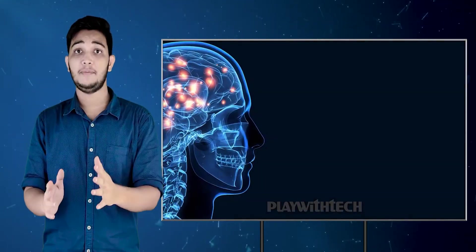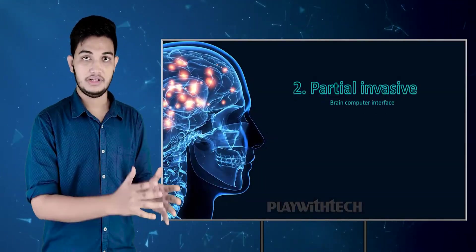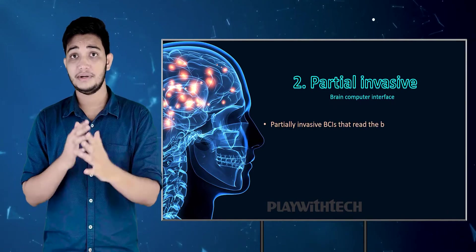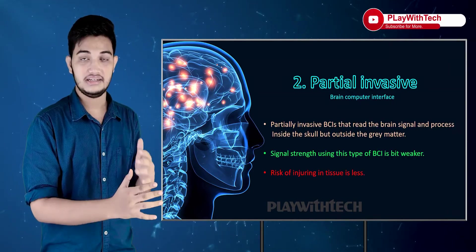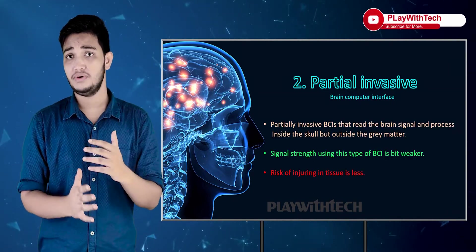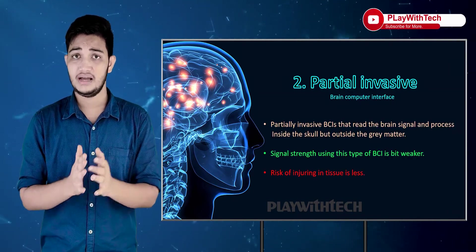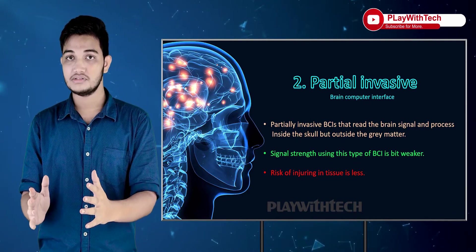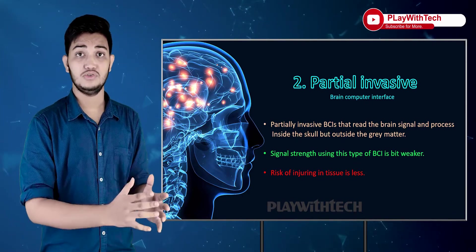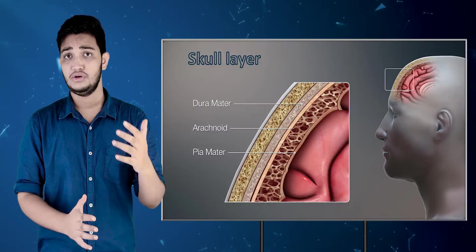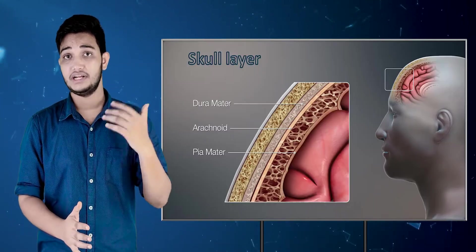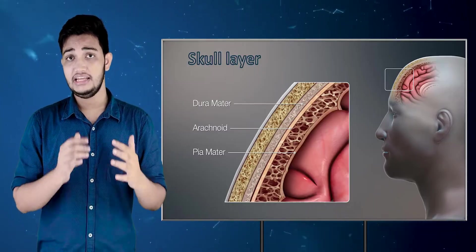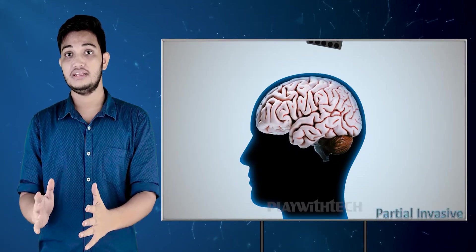Let's move to type 2: partial invasive. Here you do require surgery, but the tissue damage is less. However, the signal is weaker. Basically, you use an array of electrodes fitted on the dura — the dura mater — and this is called a brain-penetrating electrode.